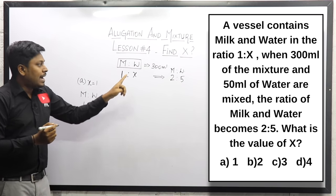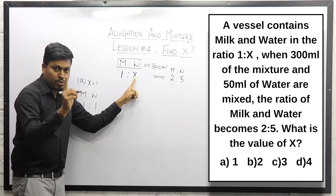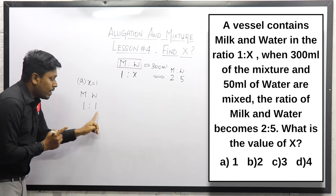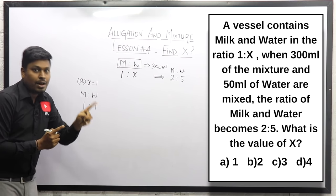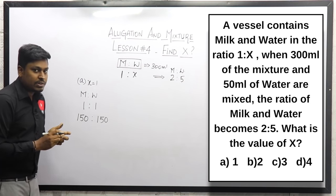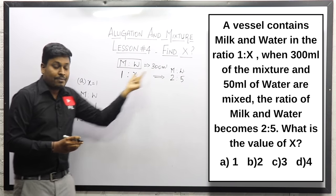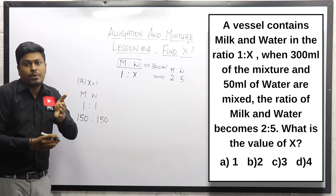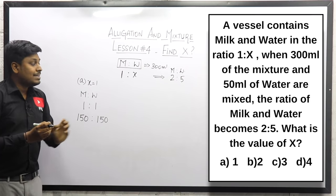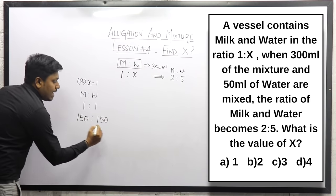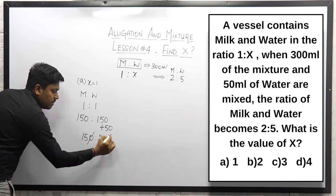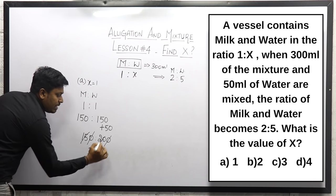Substituting x equal to 1, milk and water ratio is 1 is to 1. Out of 300 ml total, half is milk and half is water — so 150 ml is milk and 150 ml is water. Now 50 ml of water is added, so water becomes 200 ml. The final ratio is 150 is to 200. Cancelling, this becomes 3 is to 4.